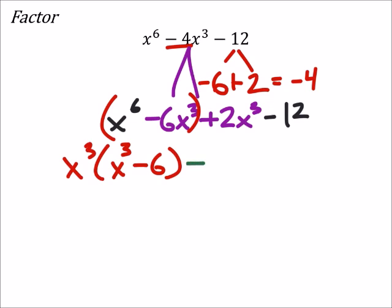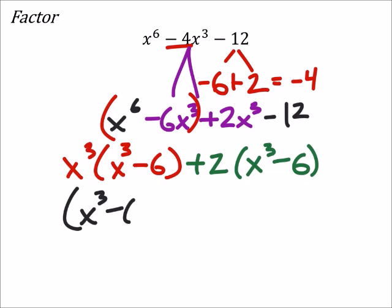And then on the second set I'm going to factor out a positive two, which gives me an X cubed minus six, which is what we wanted. So when we factor out an X cubed minus six from both of these terms, in the second set of parentheses we've got the X cubed and also the plus two.